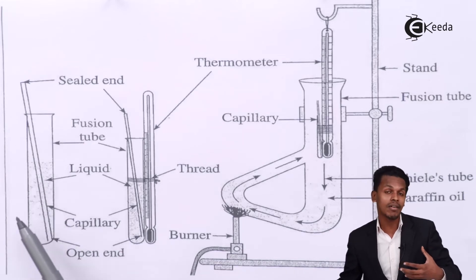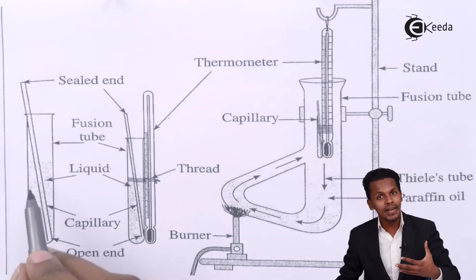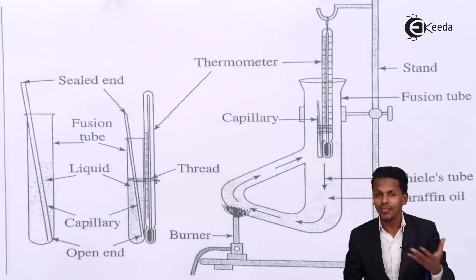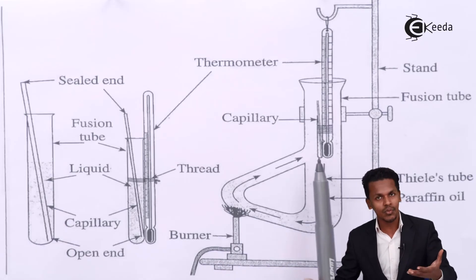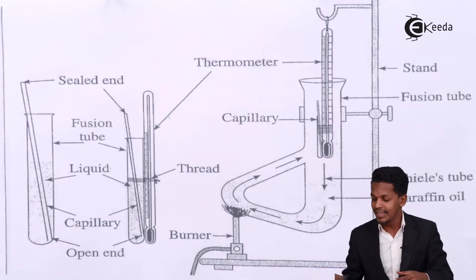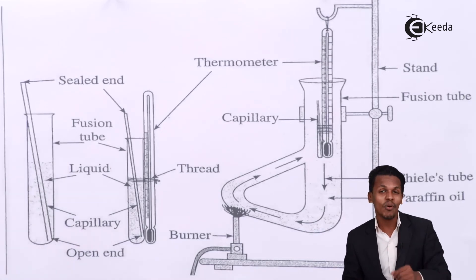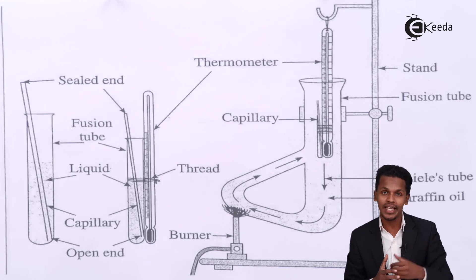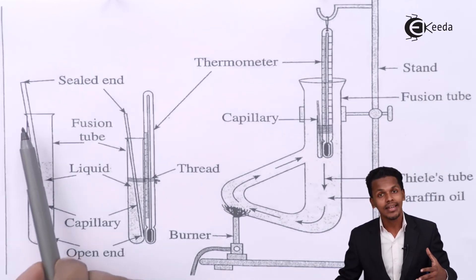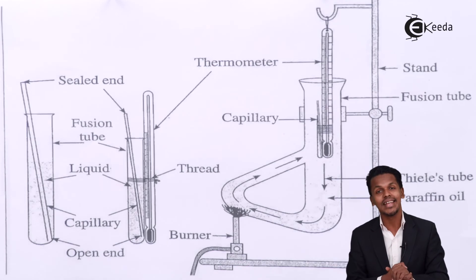The continuous bubbling increases as we apply more heat. There will be a certain point where we observe the last bubble coming out of the open end of the capillary tube, and we also observe a rise in the liquid inside the capillary tube. The temperature recorded on the thermometer at that point — where the last bubble is generated and liquid rises — is the boiling point of that particular liquid. This is how we can determine the boiling point of a liquid.